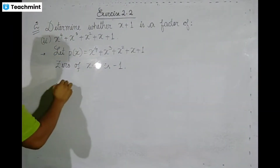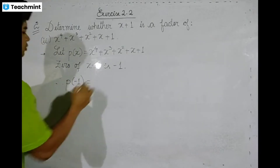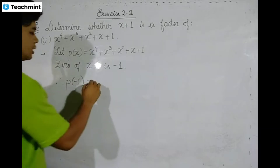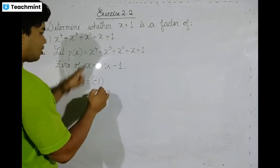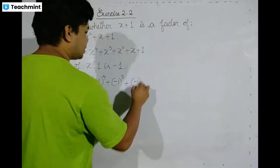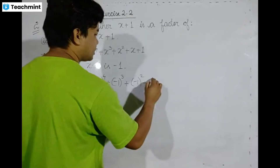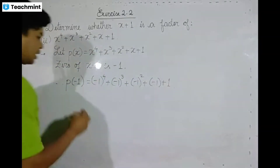Therefore, p of negative 1 equals negative 1 whole cube plus negative 1 whole square plus negative 1 plus 1.